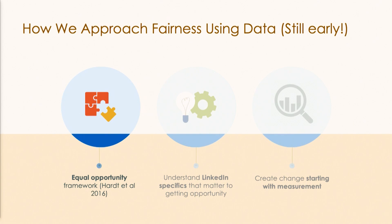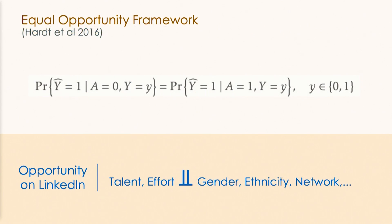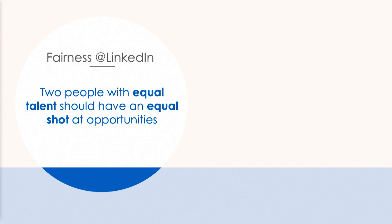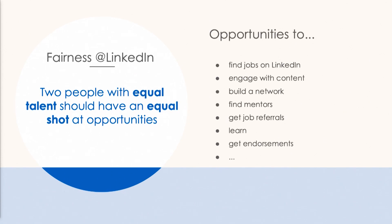I'll share the three dimensions we are trying to tackle to approach fairness using data. First, we adopted the equal opportunity framework introduced by Hardt et al. in their 2016 NeurIPS paper, which says that opportunities individuals can get on LinkedIn, given their talent and effort, should be independent of attributes such as gender, ethnicity, and so on. To put it plainly, our fairness mission is to ensure that two people with equal talent should have an equal shot at opportunities — not just for jobs, but for engaging with content, building networks, finding mentors, getting endorsements, and so on.